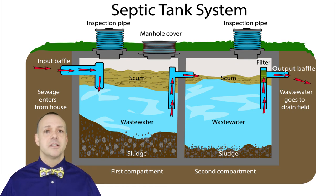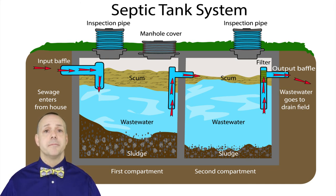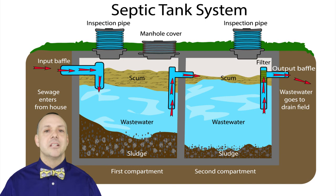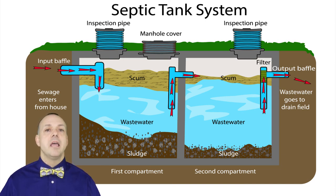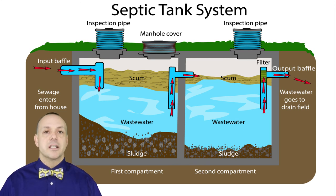Some disadvantages of a septic system include the homeowner being responsible to maintain and pump the system. The homeowner must pay attention to what is being thrown in the toilets and drains. Large rainstorms could potentially cause flooding, and they could be really expensive to replace or install.